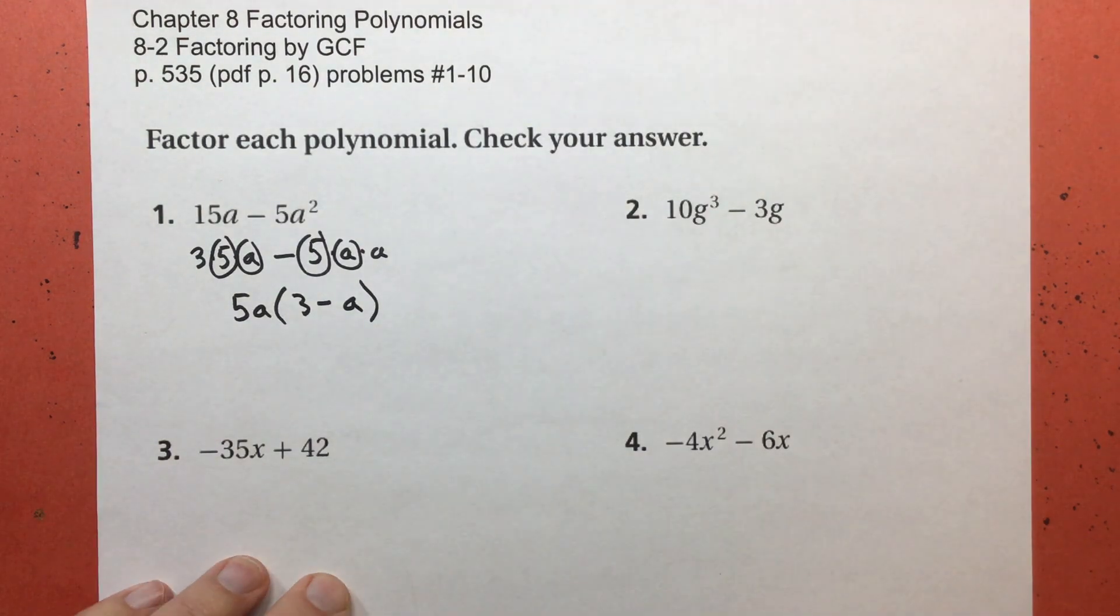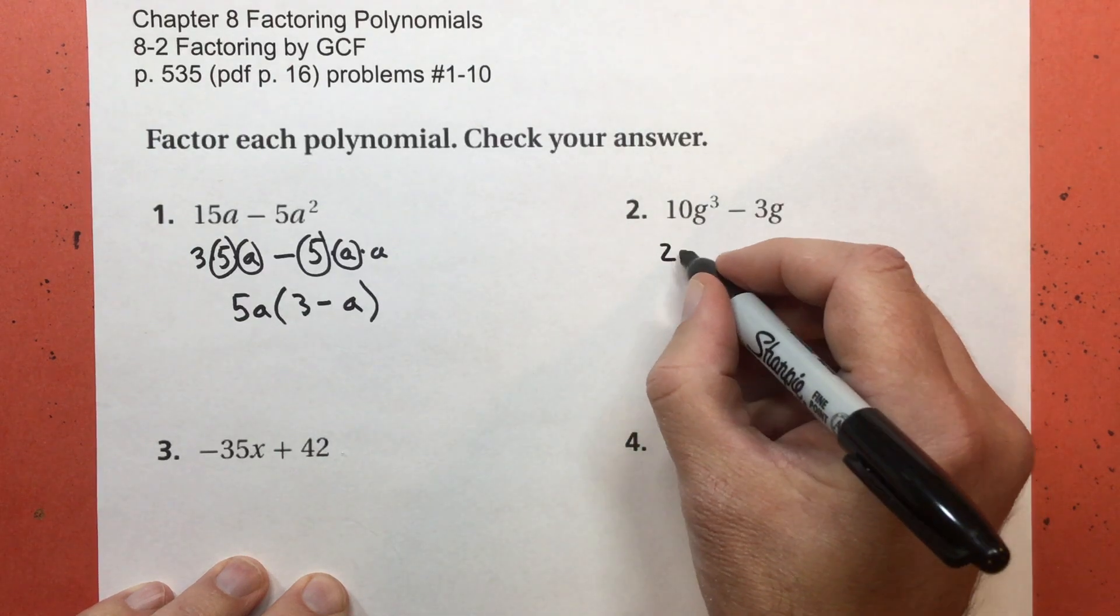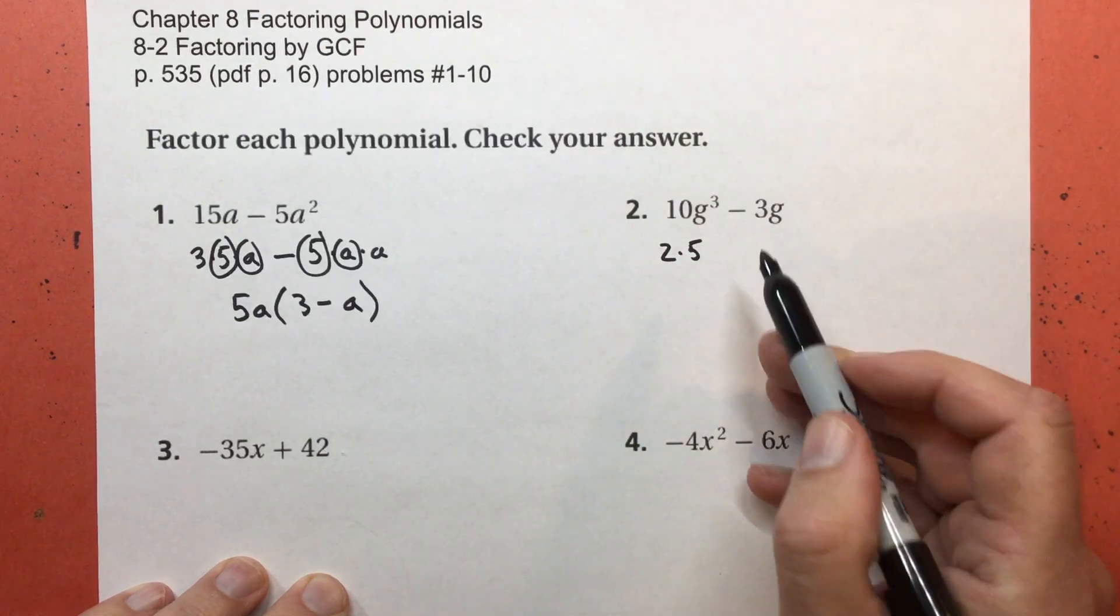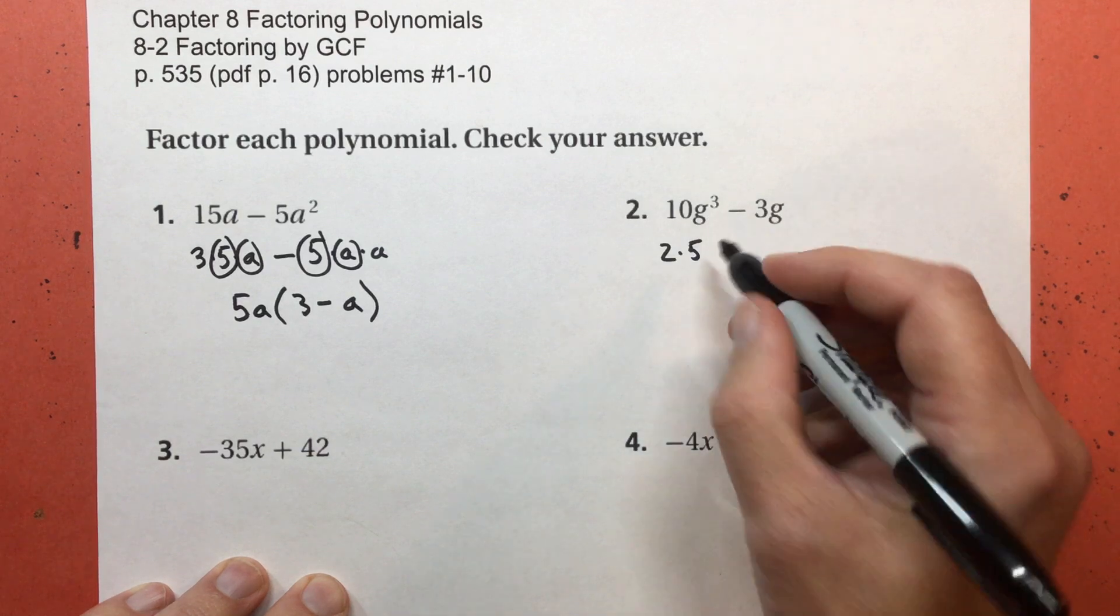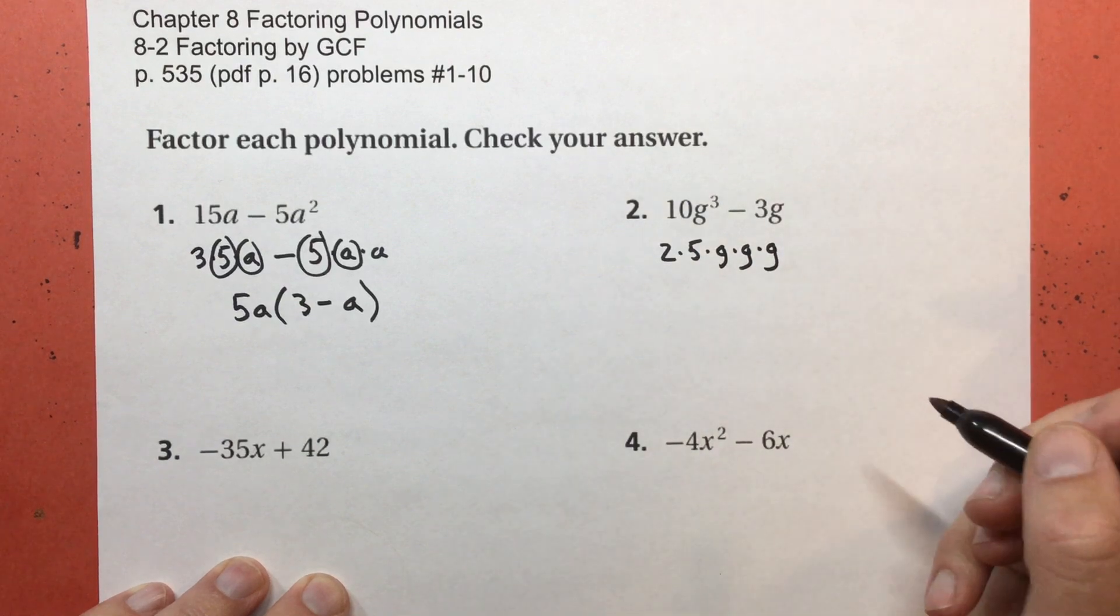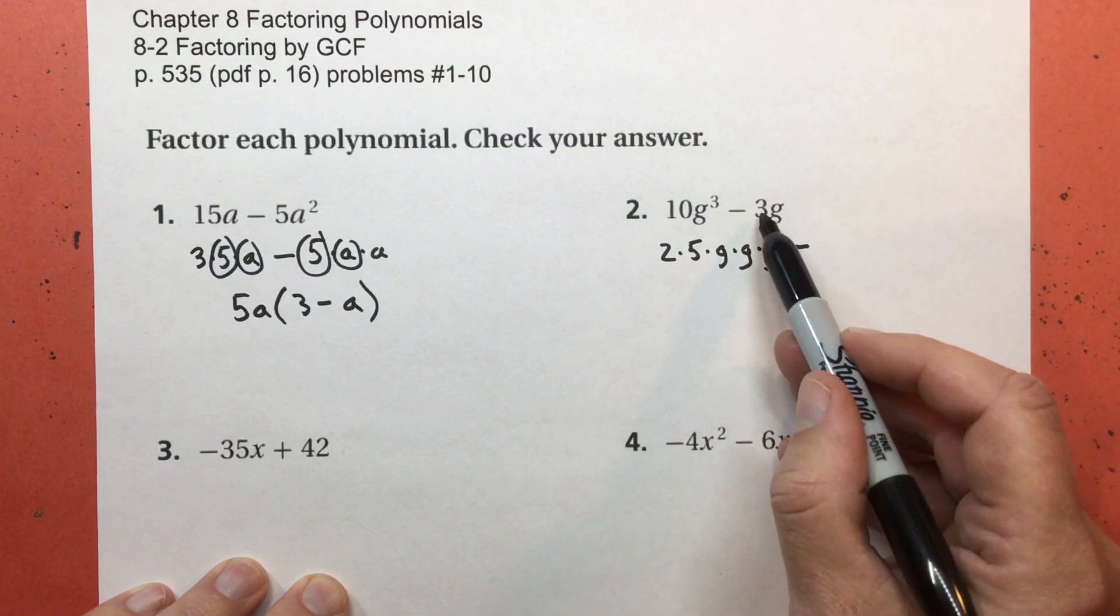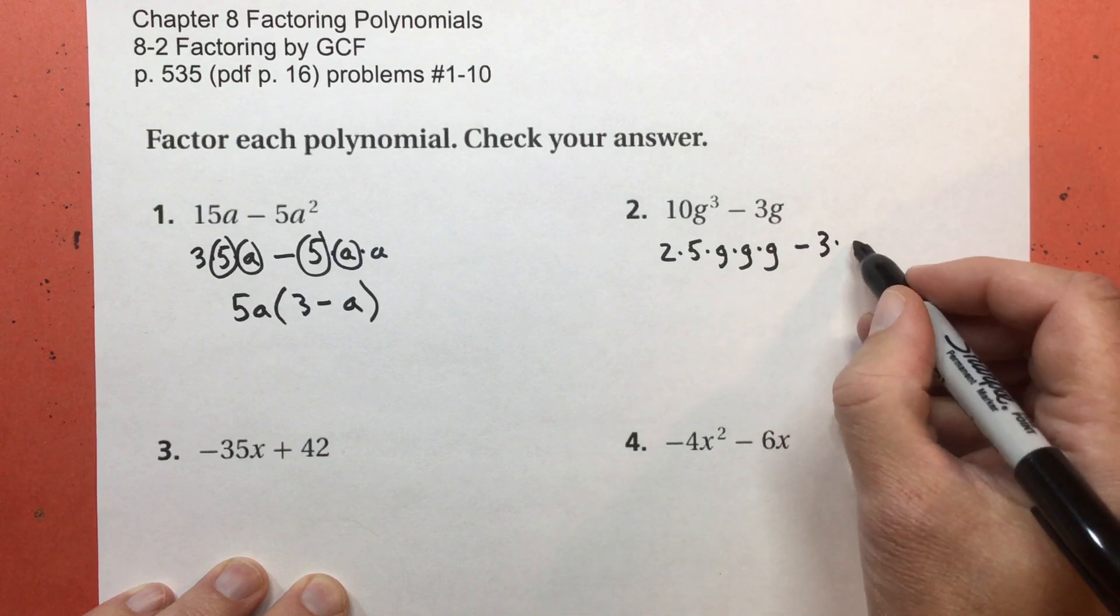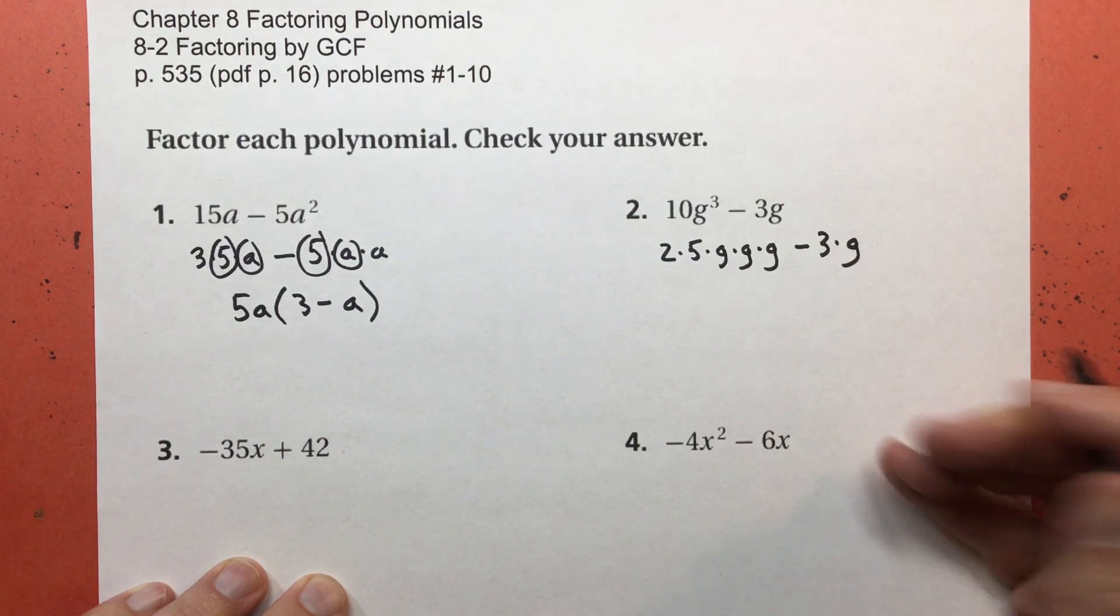Problem number 2. Think primes. 10 is 2 times 5. Both of those are prime. Think factoring by the exponents. Think about the exponents. This is G times G times G. Subtract. Think primes. 3 is already prime. And there's only one G there. And no, that's not an internet joke.